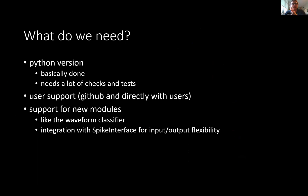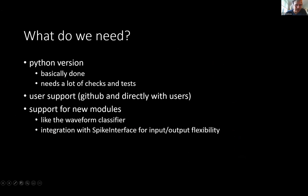To conclude, I think what we need at this point is to push out the Python version and shift the community towards it — they are all using the MATLAB version still. The Python version is mostly done but needs a lot of checks, tests, and confirmation that it works the way we think it should. We need a lot of user support, and we need support for new modules to make Kilosort more modular so that we can add some of the other things the community has developed into it.